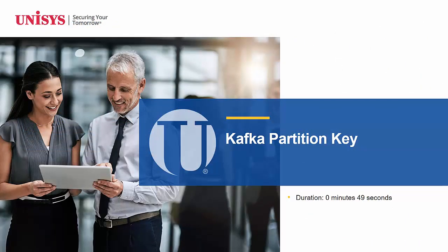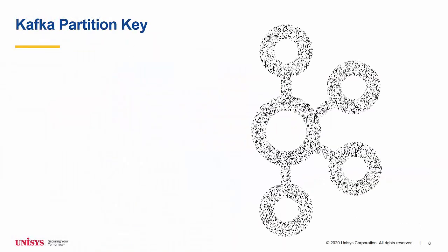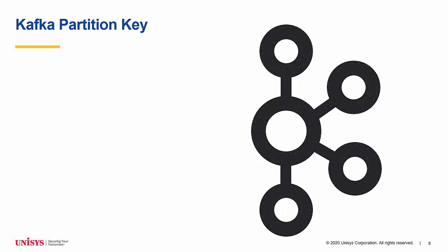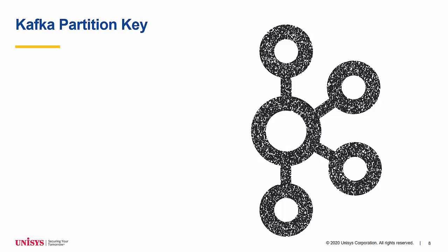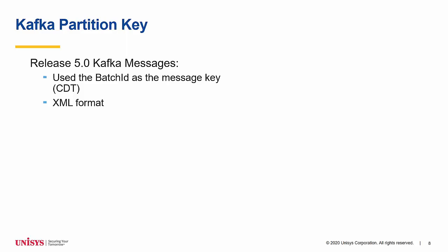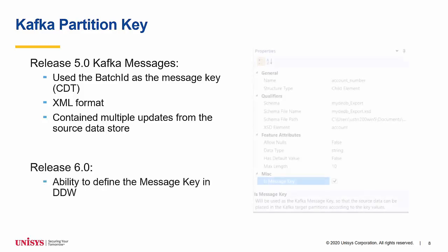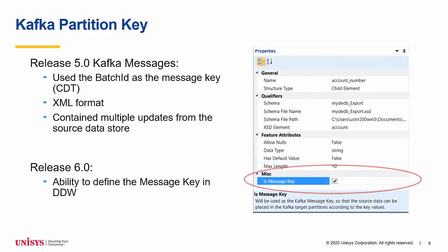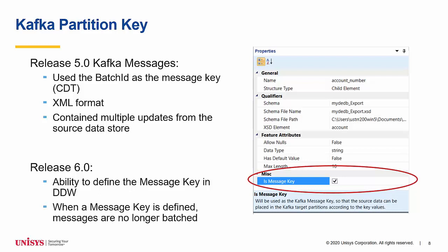Kafka Partition Key. Release 5.0 enabled transformation to a Kafka target. In Release 5.0, Kafka messages used the batch ID as a message key, were defined in XML format, and contained multiple updates from the source data store. With the release of 6.0, users can define a target feature from their feature mapping to be their message key. When the user has opted to specify their message key, each message will contain a single update to the classifier in question.